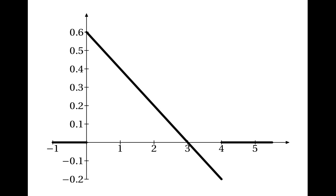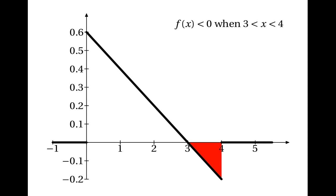Could this be the graph of a probability density function? Well, the answer is no, it couldn't, because there's a part of the graph which dips below the x-axis. What this means is that the probability that x is between 3 and 4 would be negative. The fact that this function is less than 0 when x is between 3 and 4 means that this can't be a probability density function.